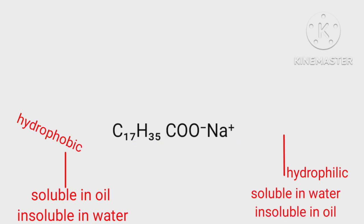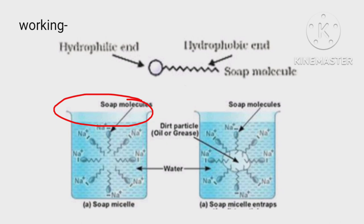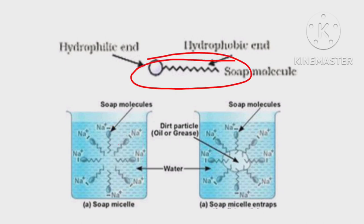When soap is at the surface of water, the hydrophobic tail of soap will not be soluble in water and the soap will align along the surface of water with the ionic end in water and the hydrocarbon tail protruding out of water.